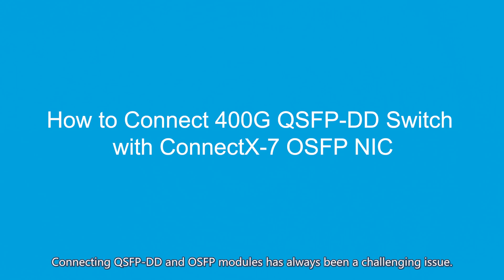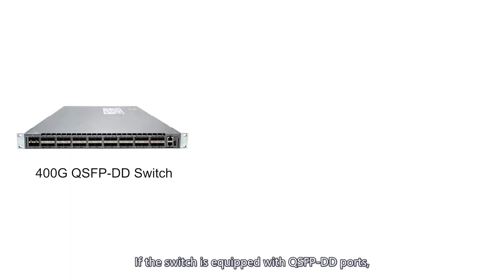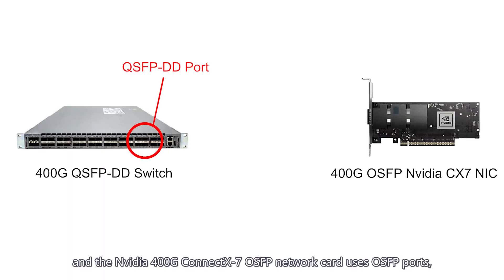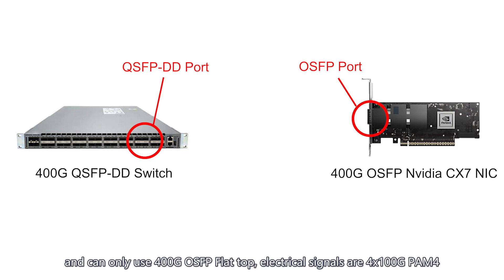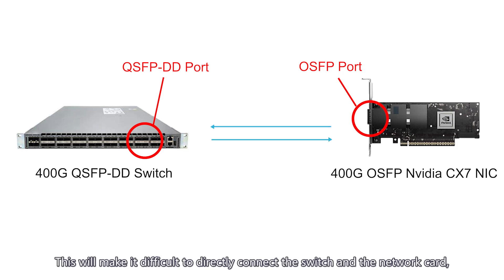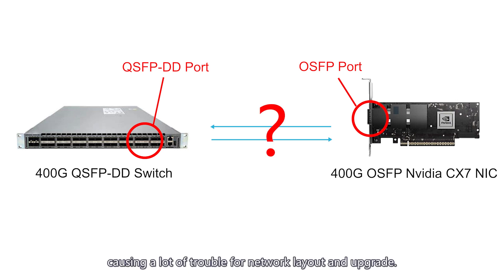Connecting QSFPDD and OSFP modules has always been a challenging issue. If the switch is equipped with QSFPDD ports, and the NVIDIA 400G ConnectX-7 OSFP network card uses OSFP ports, and can only use 400G OSFP flat top with electrical signals of 4x100G PAM4, this will make it difficult to directly connect the switch and the network card, causing a lot of trouble for network layout and upgrade.